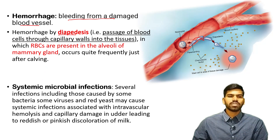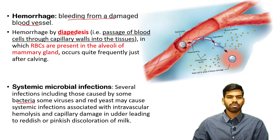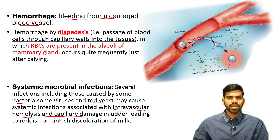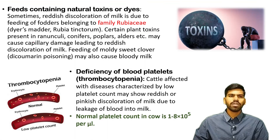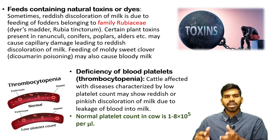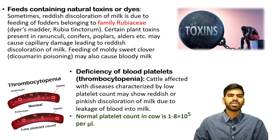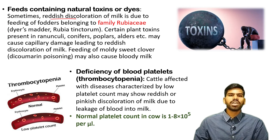Systemic microbial infections: several infections including those caused by bacteria, viruses, and rickettsiae may cause systemic infections associated with intravascular hemolysis and capillary damage in the udder. This leads to reddish or pinkish discoloration of the milk. Reddish discoloration of milk is also sometimes due to feeding of fodder belonging to the family Rubiaceae.